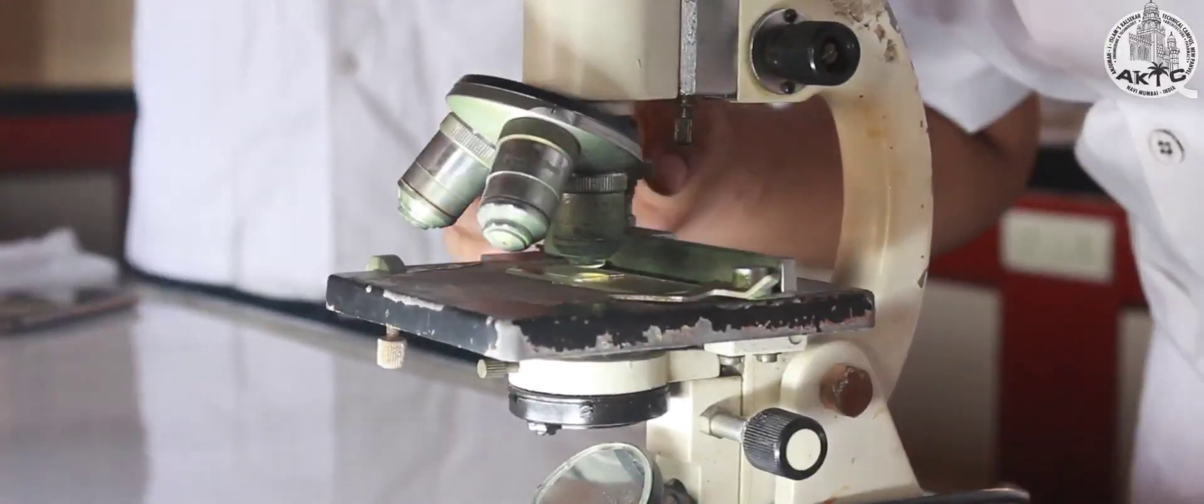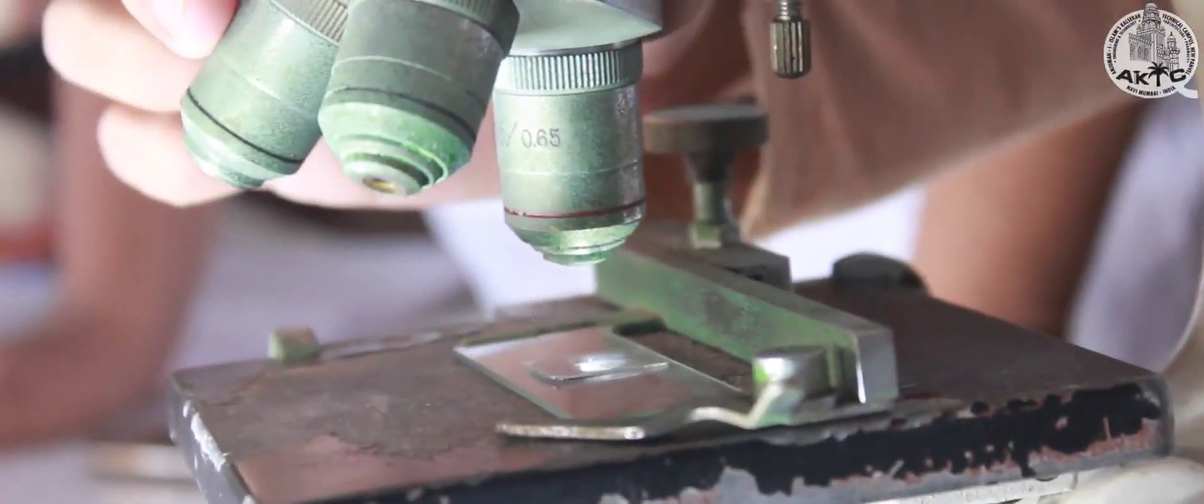Mix it and put a drop of glycerin over it. Place the cover slip avoiding any air bubble under it. Watch it under the 10x objective and then later 45x.